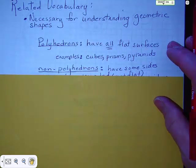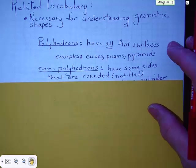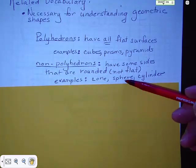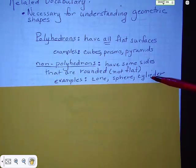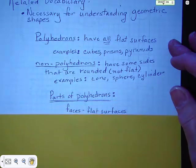Non-polyhedrons have some flat sides, and they have some sides that are rounded. For example, cones, spheres, and cylinders. Pretty good chance that you'll experience this on a quiz. You'll have to name some.